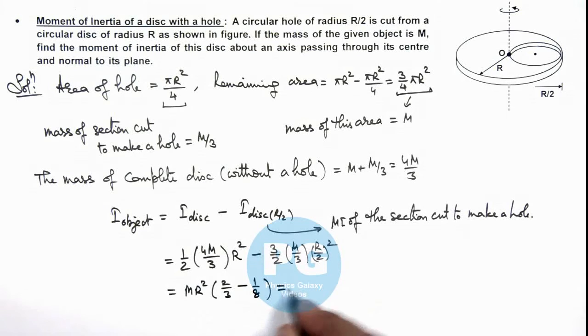So this finally gives us (13/24)MR². That is the result of this problem.